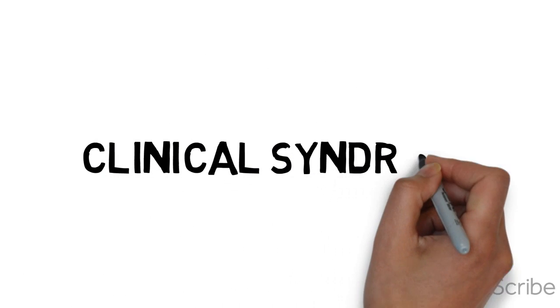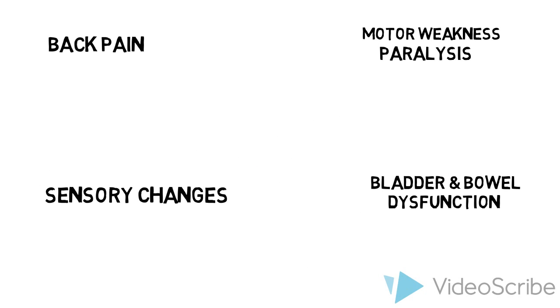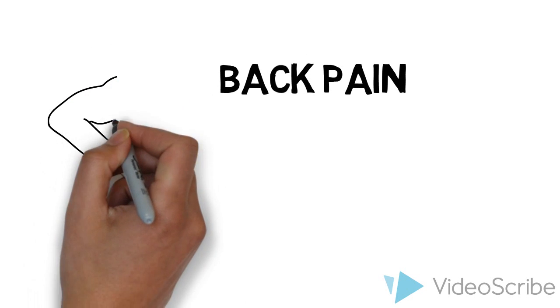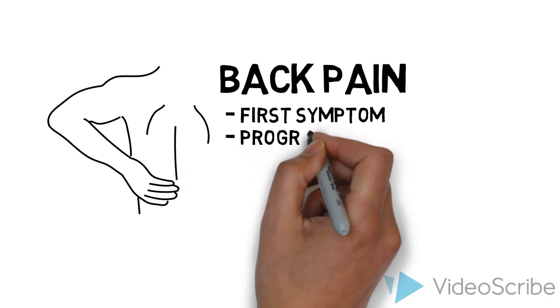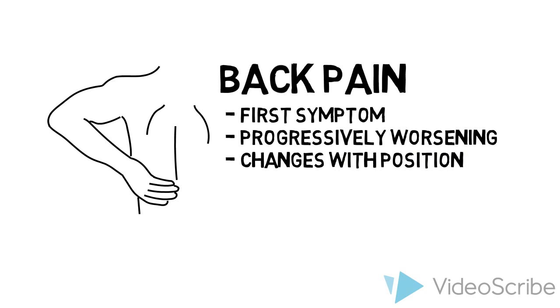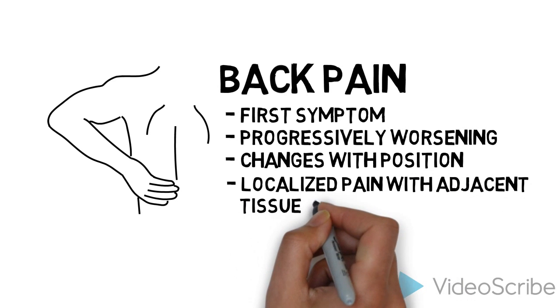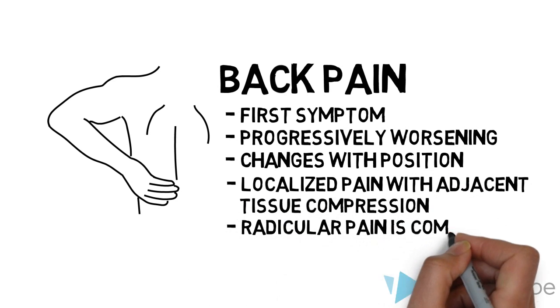Clinical Syndrome. SCC often causes these symptoms: back pain, motor weakness or paralysis, sensory changes, and bladder and bowel dysfunction. Unfortunately, the diagnosis of SCC is often delayed. Progressive worsening back pain is often the first symptom. The pain may present variably depending on the location — including worsening when lying down, when the epidural space is stretched, or worse with walking due to spinal instability. Localized pain may occur when the tumor affects adjacent soft tissues or dural nerves. Radicular pain is also often common.